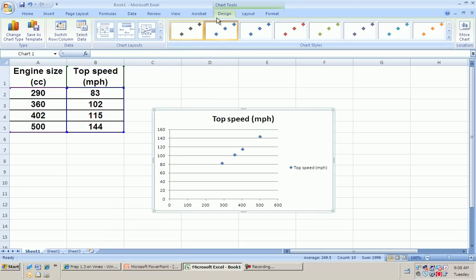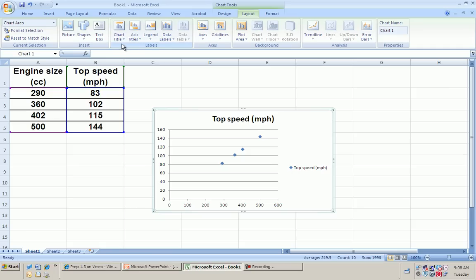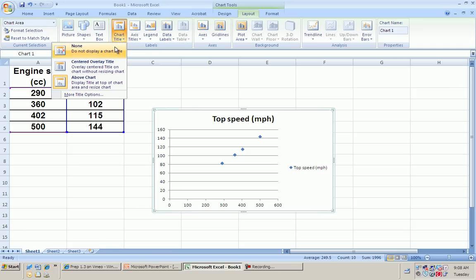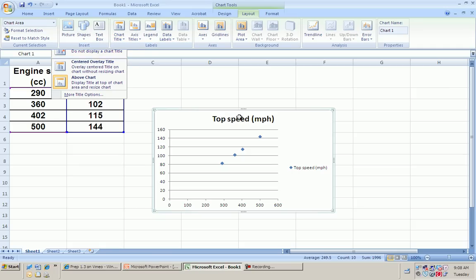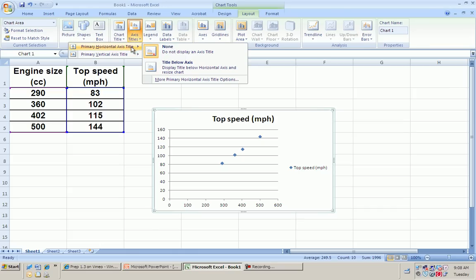And then, remember, I go to layout. And I am going to change my chart title. No, I guess I could just double-click on my chart title. I'm going to go to axis titles. Primary, horizontal, axis title, title below axis.